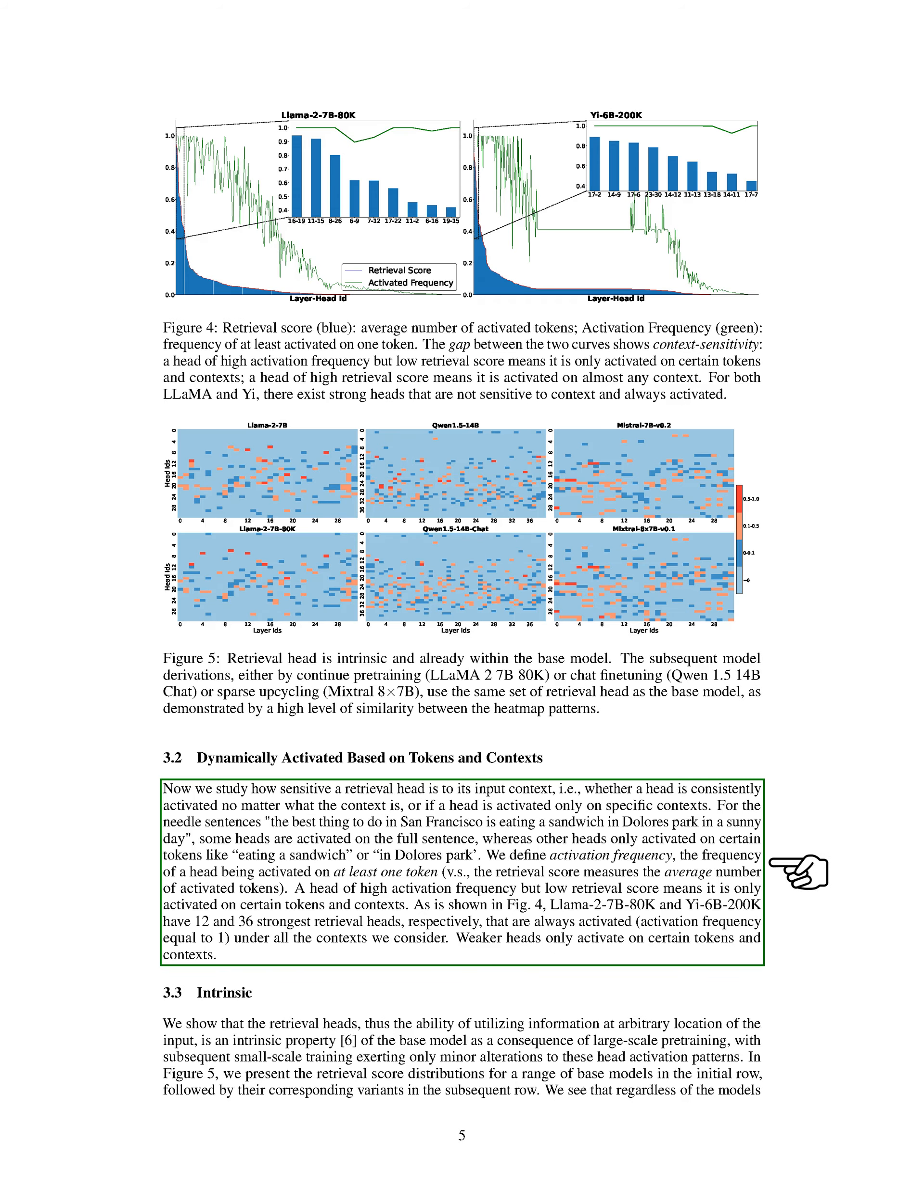We also studied how retrieval heads are activated based on tokens and contexts. Some heads are consistently activated across all contexts, while others are specific to certain tokens or contexts. Models like LAMA 2-7B 80K and YI-6B 200K have retrieval heads that are always activated under all contexts, while weaker heads are more selective.